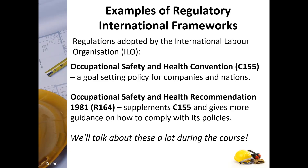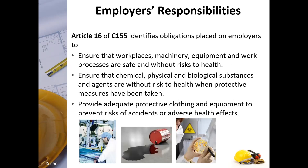An example of the international regulatory framework is the ILO Occupational Safety and Health Convention C155 — a goal-setting policy for companies and nations on how to follow health and safety. R164, which happened in 1981, supplements C155 and gives more guidance on how to comply with those policies. C155 sets and publishes the policy; R164 elaborates how it will be implemented.